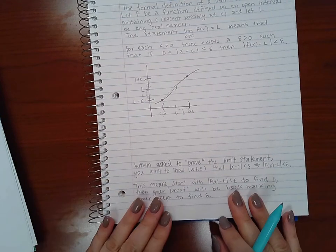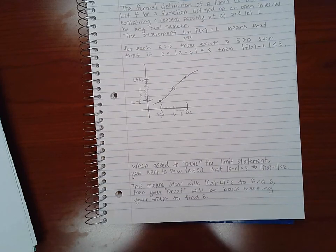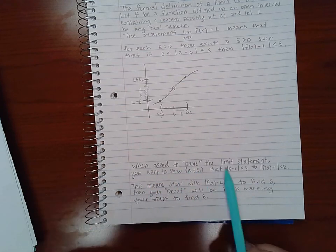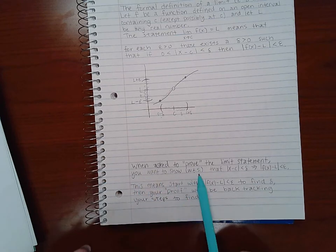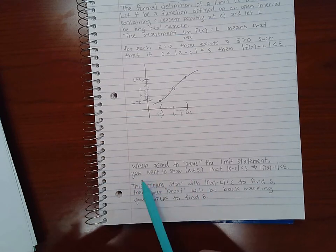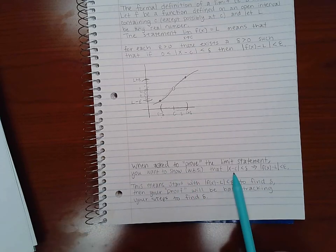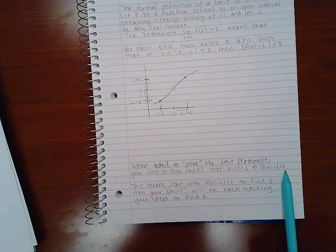Here's some statements that I want to make before we go and try to do the problems using the limit definition. When asked to prove the limit statement, you want to show - WTS is a short version of 'I want to show' - that when this distance is smaller than delta, that automatically means or implies that this distance will be smaller than epsilon.